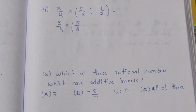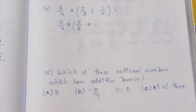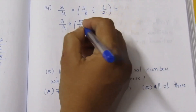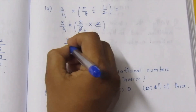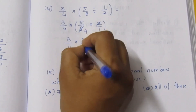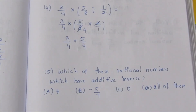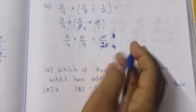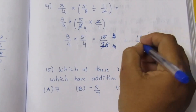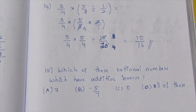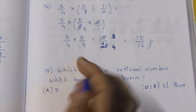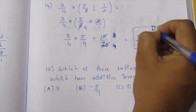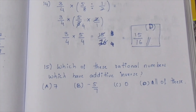Here 1 by 2 becomes 2 by 1 — this is the reciprocal. So 2 times 4 equals 8. Now: 3 by 4 into 5 by 4 — numerator multiplied with numerator, denominator multiplied with denominator. 5 times 3 is 15, 4 times 4 is 16, giving us 15 by 16. So 15 by 16 — Option D is the correct answer for question 14.